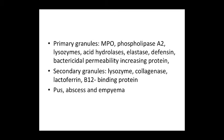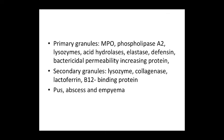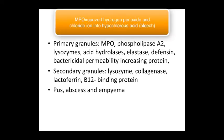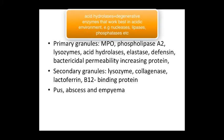Neutrophil granules come in two types. The primary granules, also known as azurophilic granules, contain myeloperoxidase (MPO), which converts hydrogen peroxide together with chloride ions into hypochlorous acid — essentially bleach — which is cytotoxic to bacteria. Phospholipase A2 breaks down the bacterial cellular membrane. Acid hydrolases are proteins that work preferably in acidic conditions and can include phosphatases and sulfatases.